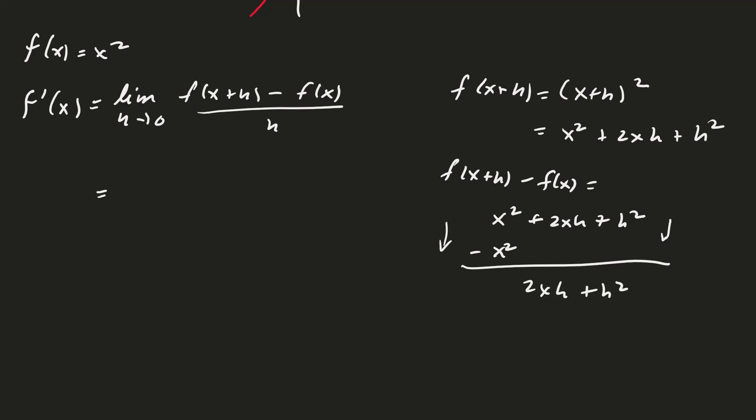Coming back to my computation, the limit as h goes to 0 of (2xh + h²)/h. I can factor h out of the numerator, leaving 2x + h. Now we can cancel the h's, and taking the limit, we get 2x.